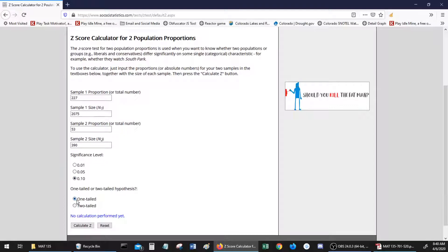It's a 10% significance level, and it's one tail because of the less than sign for our alternate hypothesis. So that's all we have to type in.